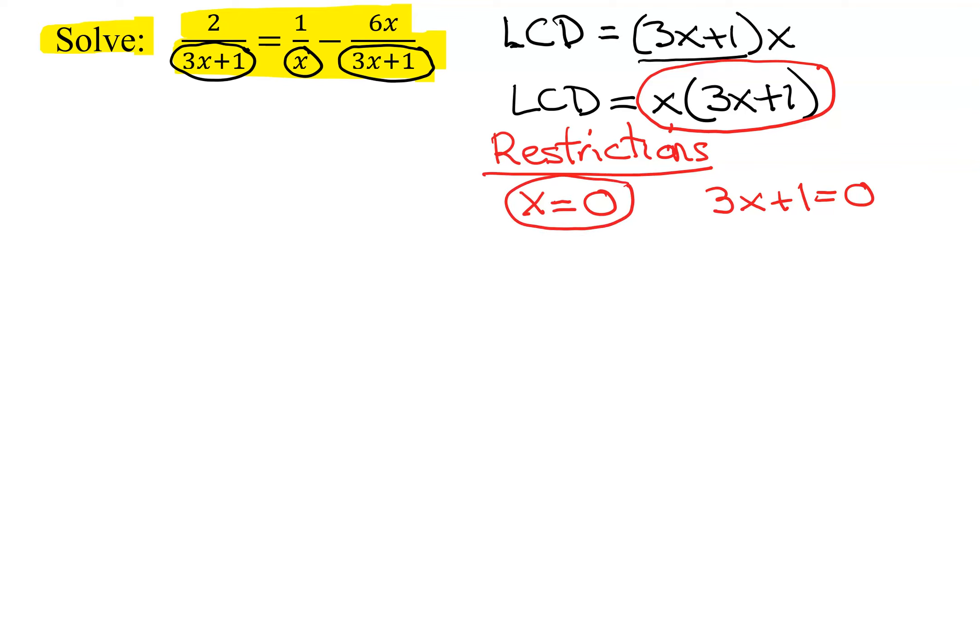This one, subtract 1 from both sides, 3x equals negative 1. Divide both sides by 3. I get x equals negative 1 third. I cannot have that as my answer.